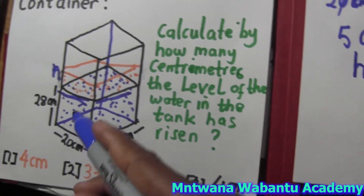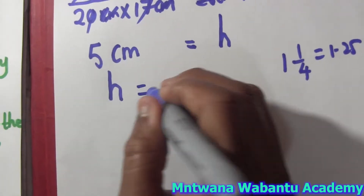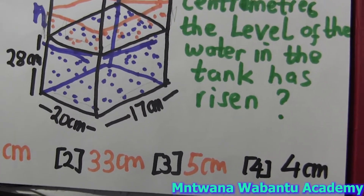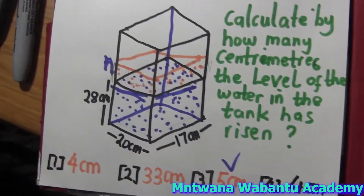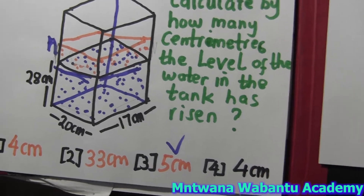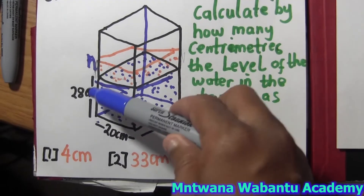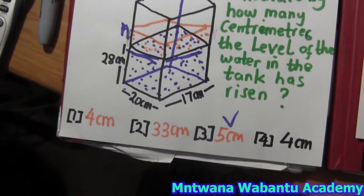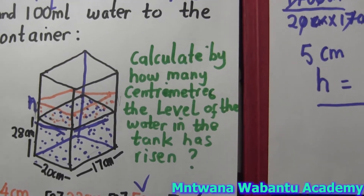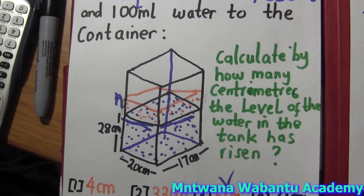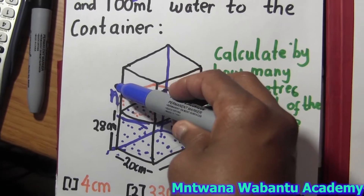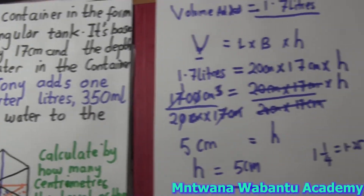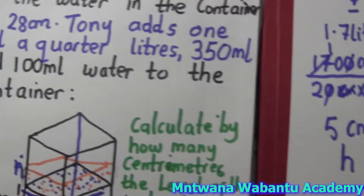So the level of water in the tank has risen by 5 centimeters — that's our answer. Looking at the options, that's option three. Sometimes they might ask what the total height of the water is from the beginning to where it's now — that would be 28 + 5 = 33 centimeters. But that's not part of the question for now. If they asked for the new height of water in the tank, the answer would be 33 centimeters.